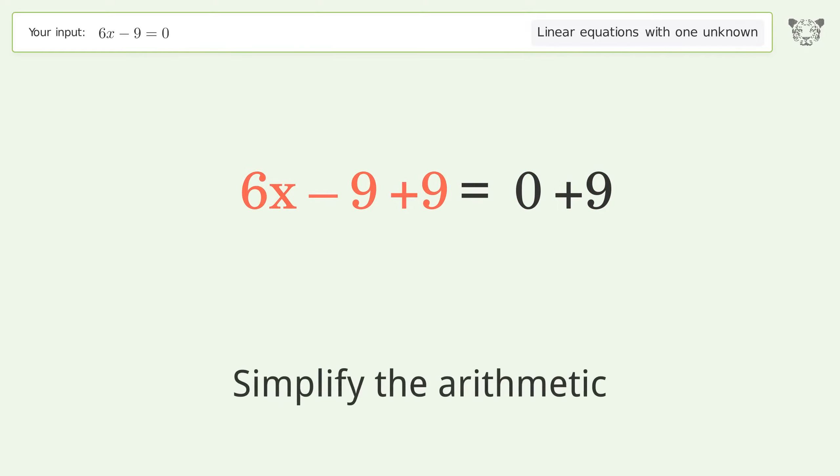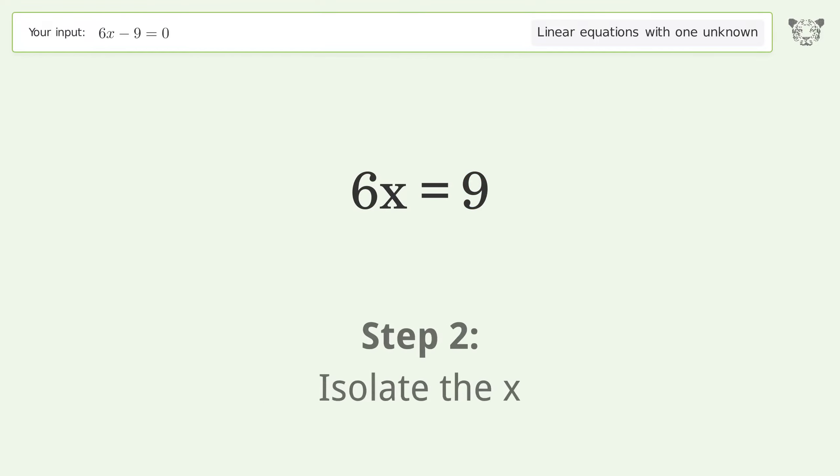Simplify the arithmetic. Isolate the x. Divide both sides by 6.